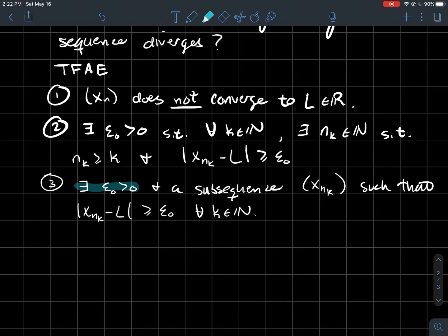There exists a particular number epsilon naught and you can find a subsequence such that that subsequence is never within epsilon naught of L. So again, that's what this says here. Subsequence is never ever within epsilon naught of L.